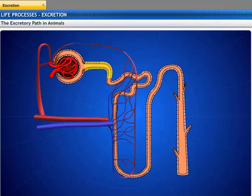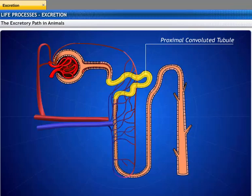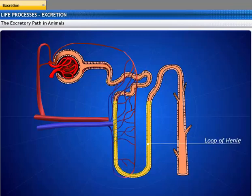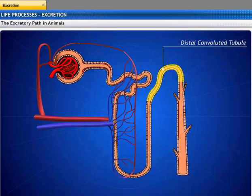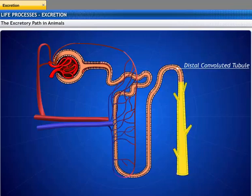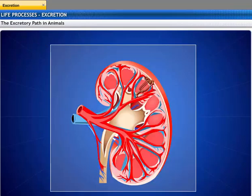The renal tubule leads away from the Bowman's capsule and becomes highly coiled to form the proximal convoluted tubule. The tubule makes a hairpin loop called the loop of Henle and joins the distal convoluted tubule. The distal convoluted tubule opens into a collecting duct, which passes into the renal medulla.